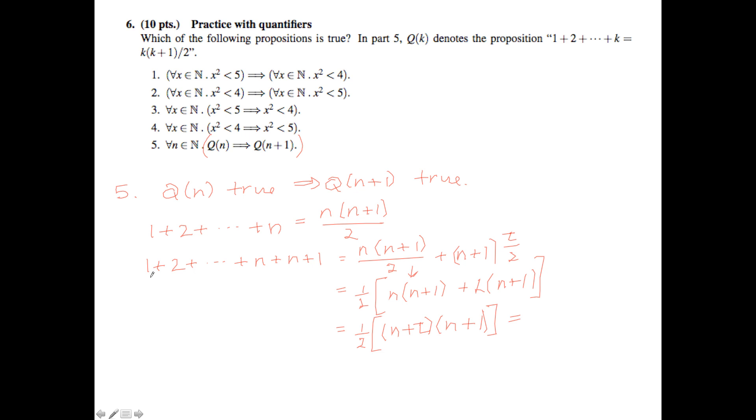Which happens to be the same as, this is the expression for Q of n plus 1, essentially. So here we've seen that we've done, we've added the numbers 1 through n plus 1 over here, and we ended up with the same expression of n plus 1 times n plus 1 plus 1, over 2. Therefore if Q of n is true, then Q of n plus 1 is true. We have shown this now. And therefore the proposition is true. Thank you.